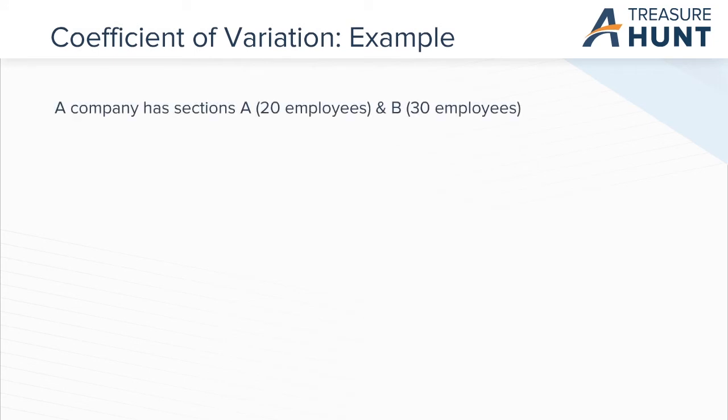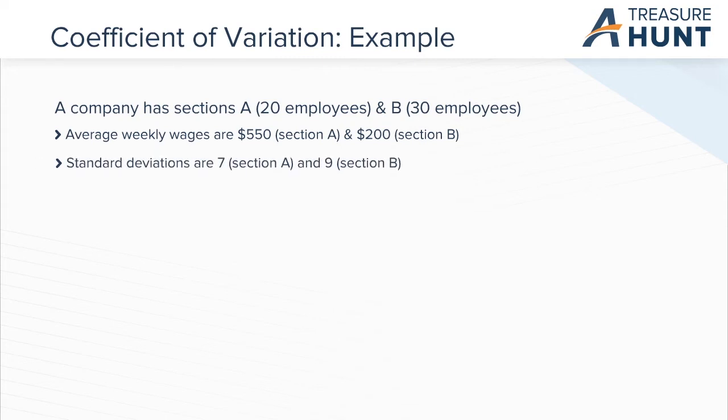Let's take an example. A company has sections A and B with 20 and 30 employees respectively. Their average weekly wages are $550 and $200. The standard deviations are 7 and 9. Which section represents larger variability in wages against larger wage bill?